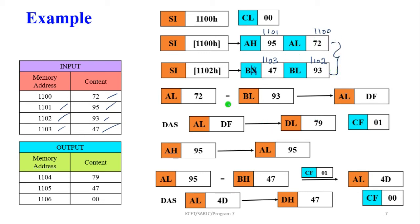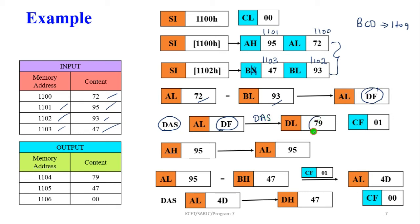Perform subtraction between AL (72) and BL (93); the result is DF. This result is not a BCD number because BCD only ranges from 0 to 9. Therefore we use the DAS instruction to adjust AL. AL contains DF; after DAS it becomes 79. The carry flag is also set to 1. Next, the AH register value (95) is moved into AL.